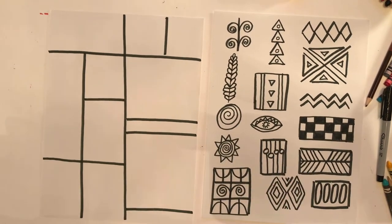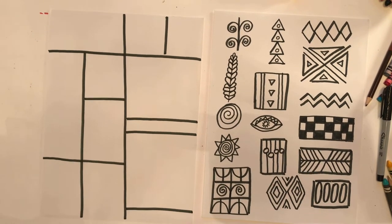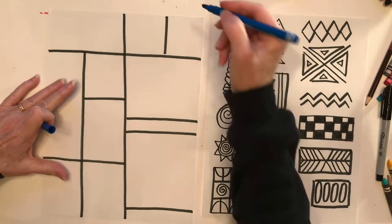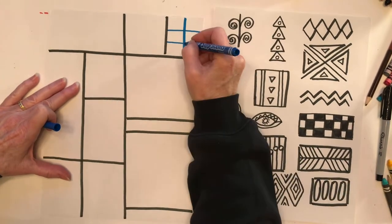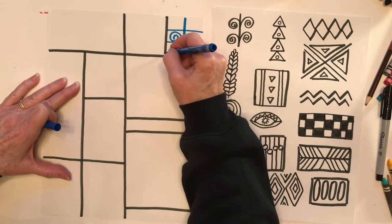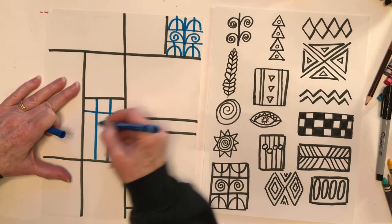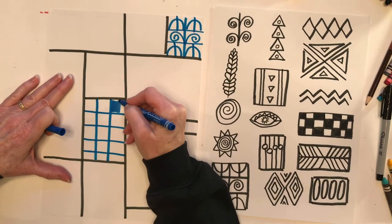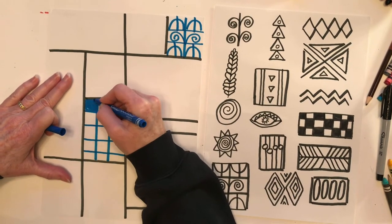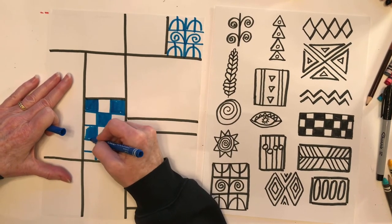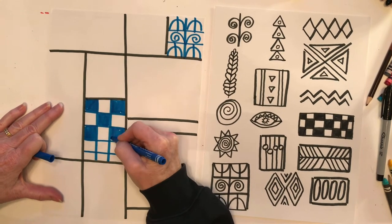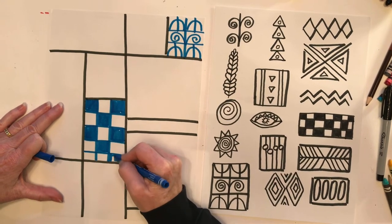Once you're finished sectioning off your paper, you can look at these patterns and designs and you can start creating your Lois Maylue Jones inspired work of art. Remember, fill in each section and color neatly and use lots of bright bold colors.